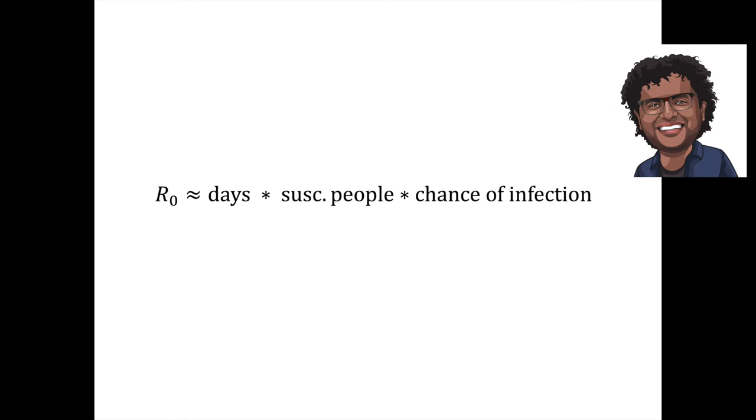We can slow the epidemic by keeping R0 below one, so that infected individuals are generating less infections.